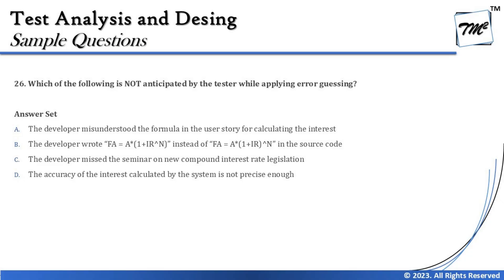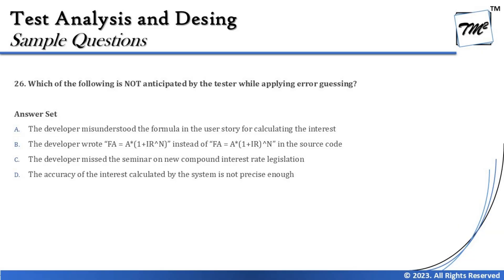Option C says: the developer missed the seminar on new compound interest rate legislation. Attending or missing seminars is something considered pretty casual — it's not necessarily an anticipation of why a developer would go wrong. Missing a seminar could be a root cause discovered after an RCA, but it is neither an error, a failure, nor a defect in itself. Seminars are not a prediction or anticipation used to conduct a test.